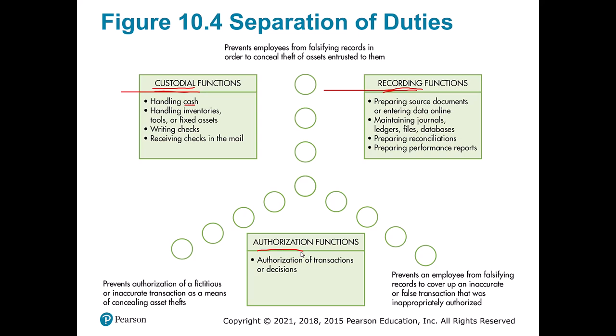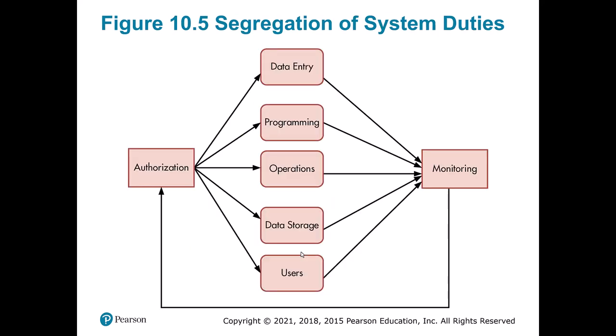In small businesses, these separations are regularly broken — it's really impossible to have truly effective controls when the same people perform all functions. But as organizations get bigger, you can do more splitting up. We can also apply ARC and segregation to systems duties: splitting data entry from programming, keeping operations staff separate from programmers, and keeping those responsible for data separate from both. The more splitting we do, the more likely we are to catch issues before they occur.